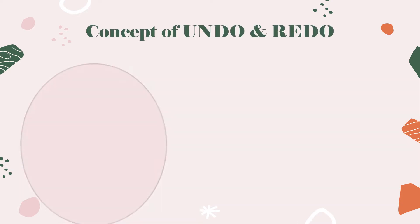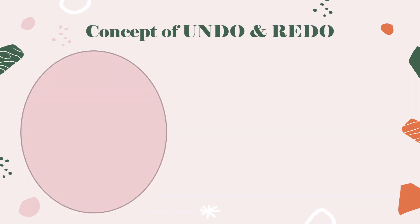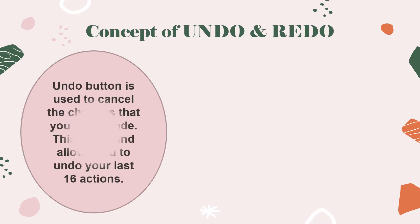In today's tutorial we will be understanding the concept of undo and redo. The undo button and redo button are both present in the quick access toolbar. The undo button is used to cancel the changes that you have made in your spreadsheet. By using this command you can undo your last 16 actions.